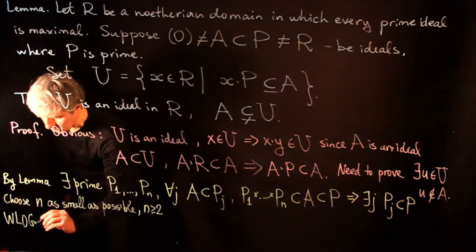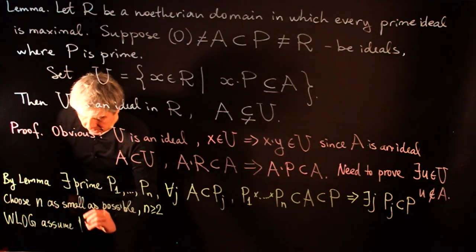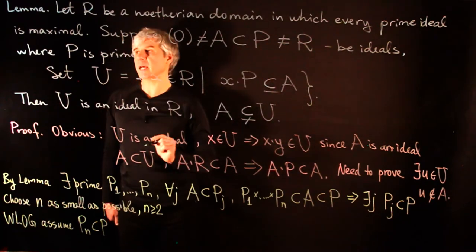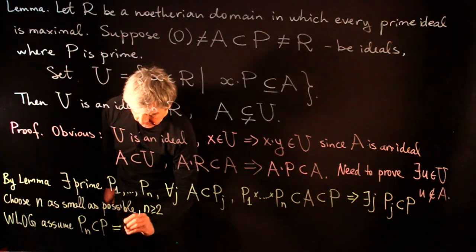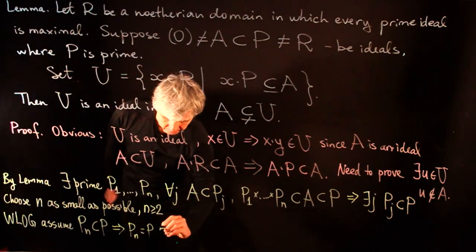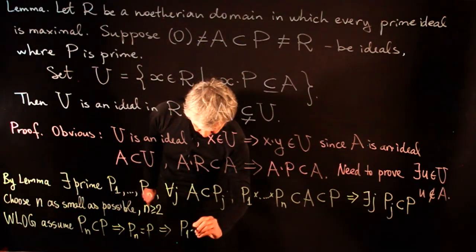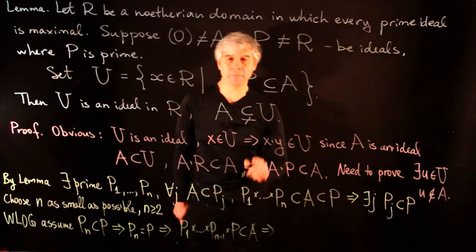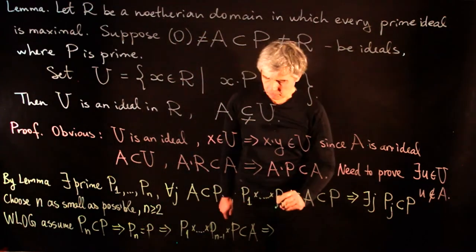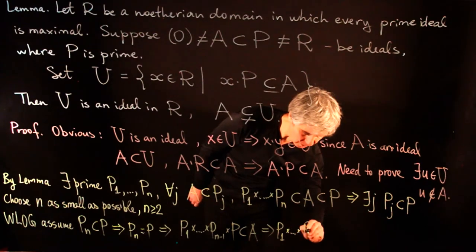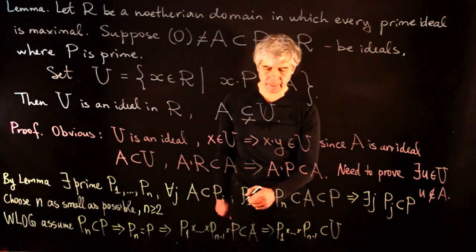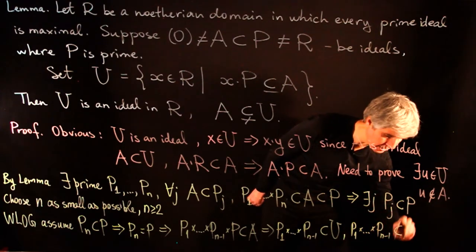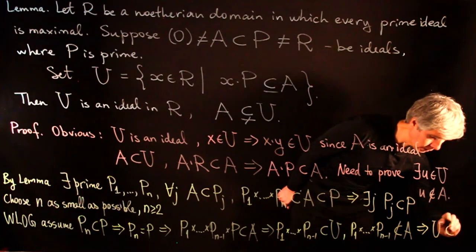Without loss of generality, assume Pₙ ⊆ P. Since prime ideals are maximal and P ≠ R, this means Pₙ = P. Then P₁·…·Pₙ₋₁·P ⊆ A. By the definition of U, the product P₁·…·Pₙ₋₁ is in U. But by minimality of n, this product is not inside A, which implies U ⊄ A. This is our claim.